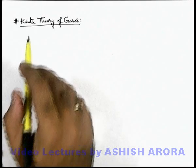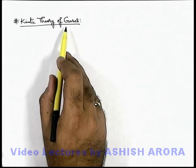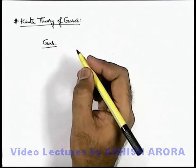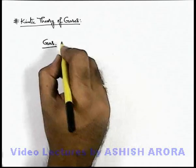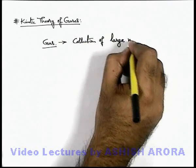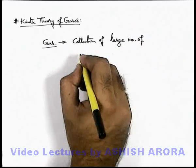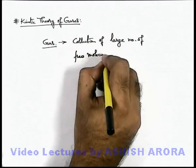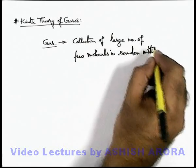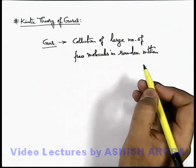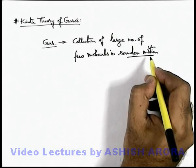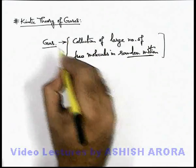Let's start with the topic of kinetic theory of gases. First, let's discuss about a gas. As we have studied in previous classes, a gas is a collection of a large number of free molecules in random motion. When a large number of molecules are in random motion and are free to move, this random motion — which we call Brownian motion — such a collection of molecules we call a gas.